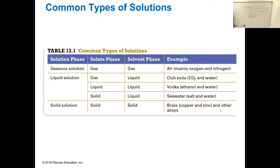Common types of solutions: a solute can be a solid dissolved in a liquid, a liquid dissolved in a liquid, or a gas dissolved in a solvent — for example, carbon dioxide in water. You can also dissolve gas in another gas; air is an example. And you can dissolve a solid in a solid — like gold and silver alloys, or alloys like brass and bronze, which are mixtures of metals. These are called solid solutions.